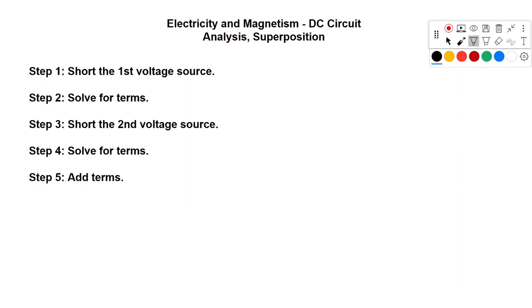So again, in summary, you want to short one voltage source. This also works on a current source if you have two current sources and you need to solve something that way. You'll solve for the terms using your basic series and parallel rules. There are a lot of different approaches to this. I prefer to make a chart, but a lot of people have other ways of doing it. You'll short your second voltage source and repeat the evaluation. Then you'll take the values you got from step two and step four, and you'll add them together to get your result.